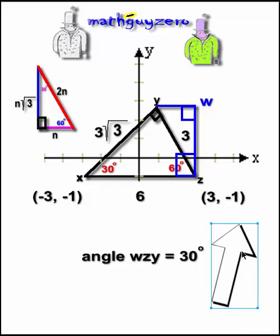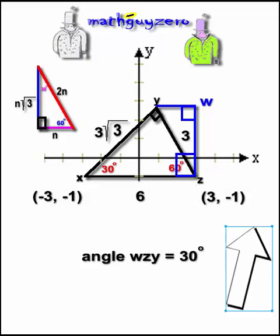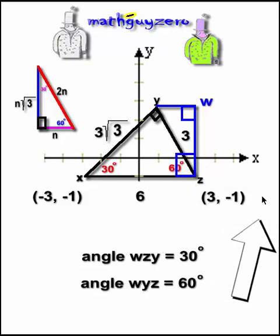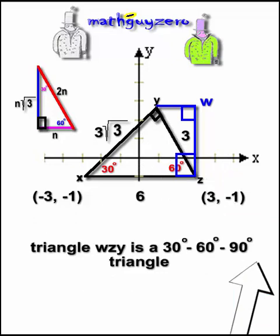Now, this angle right here, y, z, w, has to be 30 degrees because it's a 90 degree angle and we know part of it is 60. Therefore, the other chunk has to be 30. And if this little chunk is 30, that means this up here, this angle, has to be 60. So we created another 30, 60, 90 degree triangle.